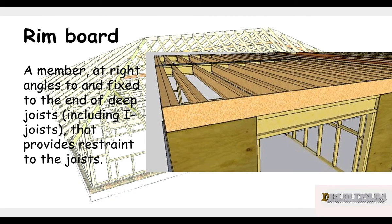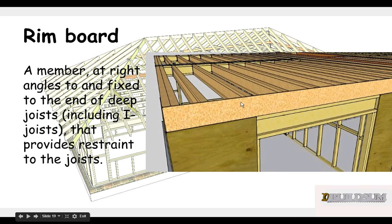A rim board is a member at right angles to and fixed to the end of deep joists, including I-joists, that provides restraint to the joists. This rim board gets fixed to the end of the joists to stop them from falling over.